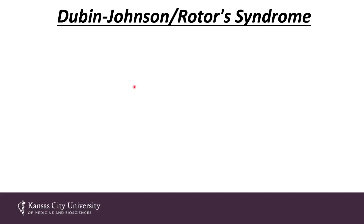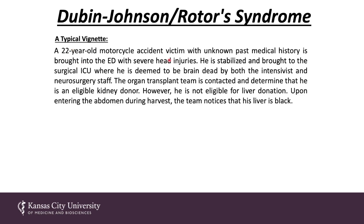Let's talk about Dubin-Johnson and Rotor's syndrome. A typical vignette: a 22-year-old motorcycle accident victim with unknown past medical history is brought to the ED with severe head injuries. He is stabilized, brought to the surgical ICU, and deemed brain dead. The organ transplant team determines he is an eligible kidney donor, but he is not eligible for liver donation. Upon entering the abdomen during harvest, the team notices that his liver is black. Key aspects: severe head injuries, eligible kidney donor, not liver because it's black.